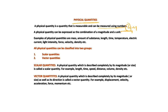You need to remember that while writing a physical quantity, we need to write the combination of magnitude and a unit. Magnitude is the numeric value. For example, the mass of an object is 10 kilograms — 10 is the magnitude, the numeric value, and kilogram is its unit. So mass is the physical quantity expressed as 10 kg. Some examples of physical quantities are mass, amount of substance, length, time, temperature, etc.